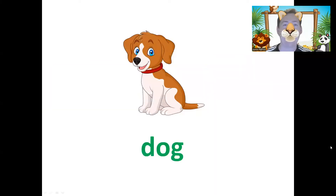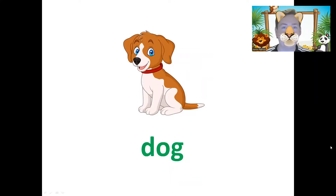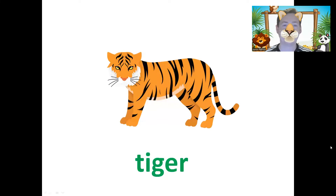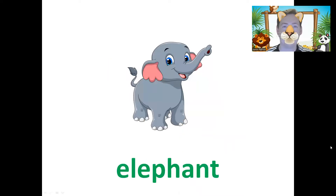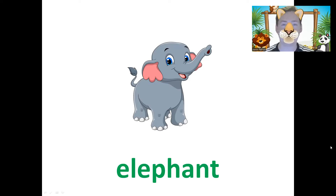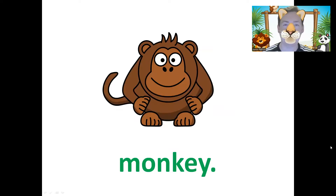Number one, we have dog. Dog. Can I hear you? Dog. Good. Number two, cat. Cat. Very good. Tiger. Tiger. With a big nose. Elephant. Elephant. Good. One more time. Elephant. Monkey. Monkey.